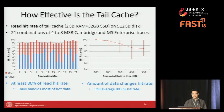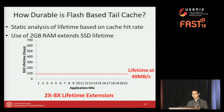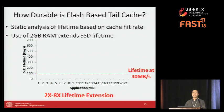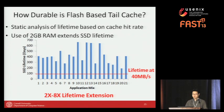Based on this read cache hit rate, we analyzed SSD lifetime in our tail cache. Assuming a 32 GB SSD accepting I/O at 40 MB/s, it would wear out within about three months. However, adding just 2 GB of RAM and accounting for the observed I/O patterns from workload traces, the overall SSD lifetime extends by two to eight times.